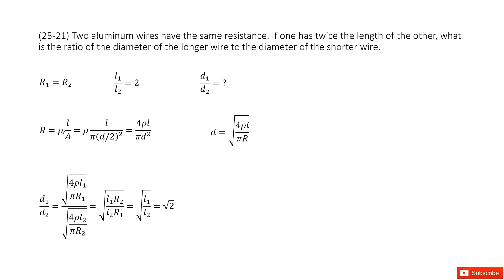Rho is the resistivity, which depends on the material, in this case aluminum. L is the length, A is the cross-sectional area, so π r squared.